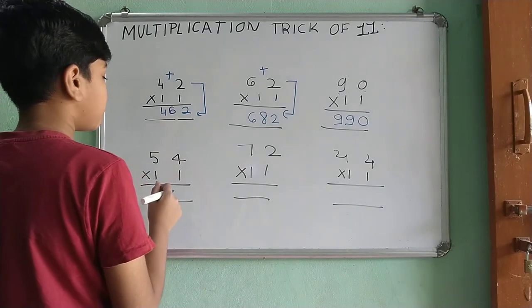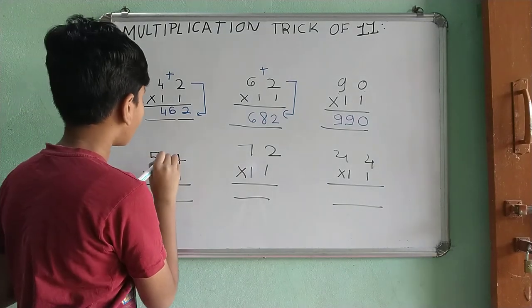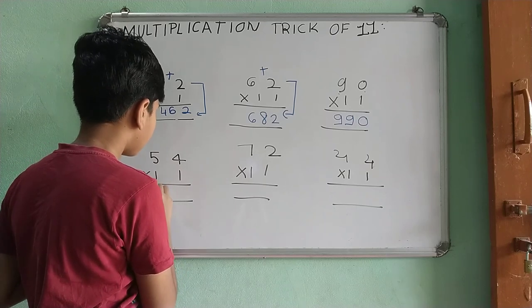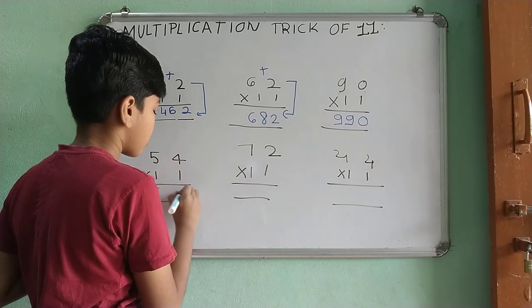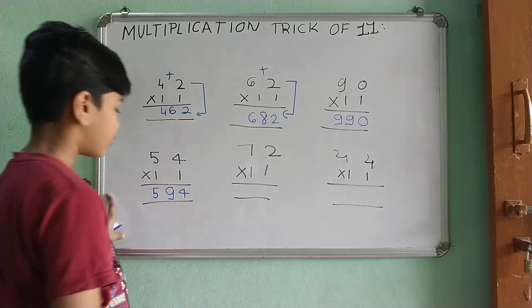54 multiplied by 11. So, take this 5, take this 4, down as it is. Add them. 594.